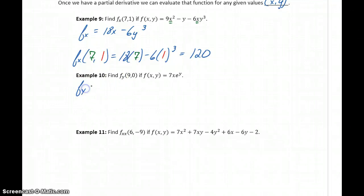In the next example, we want to find f_y. In this case, the only portion that has a y is the e^y, so our derivative will be 7x, since that's a constant multiple, and the derivative of e^y is e^y. So our derivative function is 7xe^y, and we want to evaluate f_y at x equals 9, y equals 0. We'll get 7 times 9 times e^0, which is just 1, so we get 63.